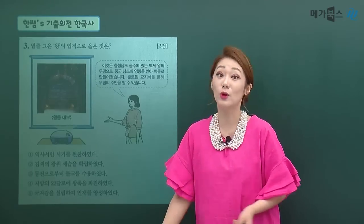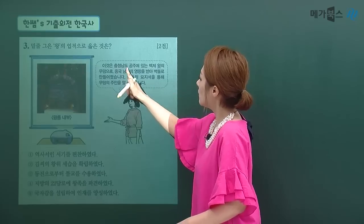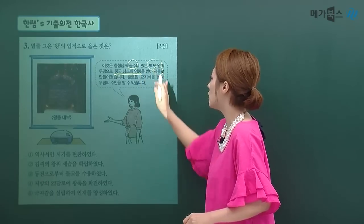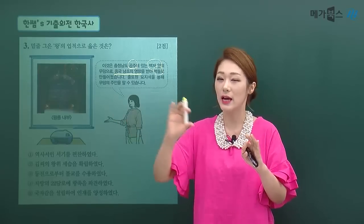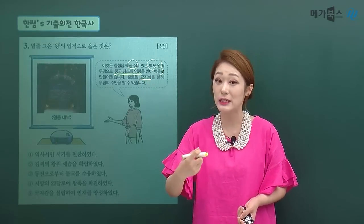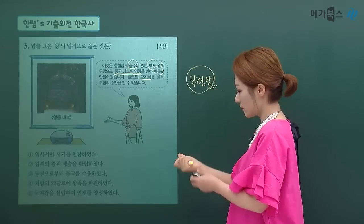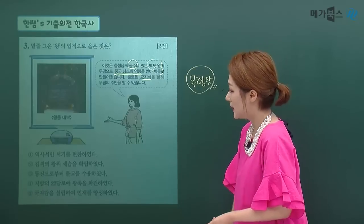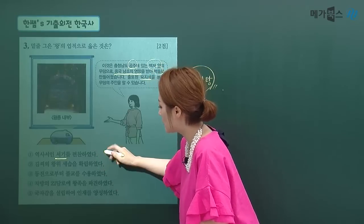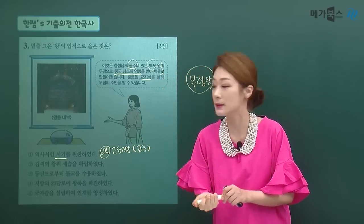3번 문제입니다. 밑줄 그은 왕의 업적으로 옳은 것을 묻는 문제입니다. 무령왕릉 내부 사진이 나와 있습니다. 충청남도 공주에 있는 백제왕의 무덤으로, 중국 남조의 영향을 받아 벽돌로 만들어졌습니다. 묘지석이 발견되어 무덤의 주인이 무령왕임을 알 수 있었습니다. 보기를 보면, 역사서 서기를 편찬한 것은 백제 전성기의 근초고왕 때 박사 고흥이 편찬한 것이고, 김씨 왕위 세습을 확립한 것은 신라 내물왕 때의 일입니다.